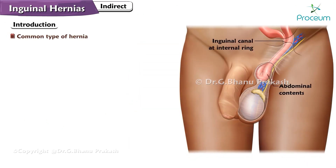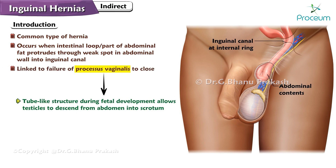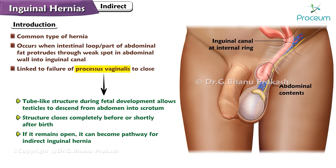Indirect inguinal hernias are a common type of hernia that occurs when an intestinal loop or part of the abdominal fat protrudes through a weak spot in the abdominal wall into the inguinal canal. The nature of this hernia is linked to the failure of the processus vaginalis to close, a tube-like structure that, during fetal development, allows the testicles to descend from the abdomen into the scrotum. In most individuals, this structure closes completely before or shortly after birth, but if it remains open, it can become a pathway for an indirect inguinal hernia.